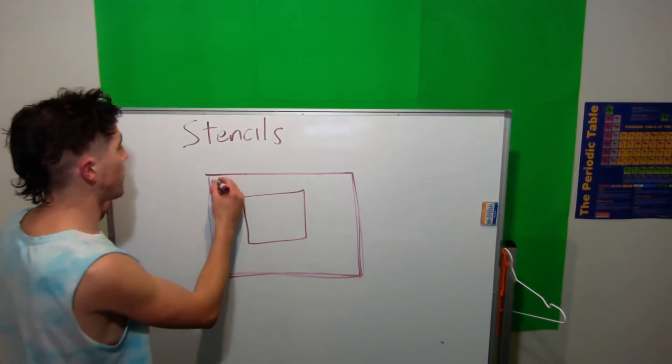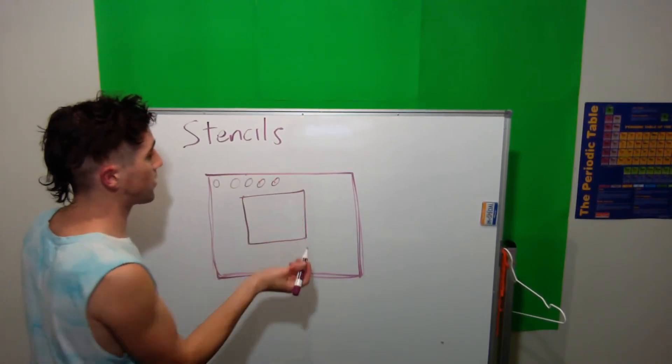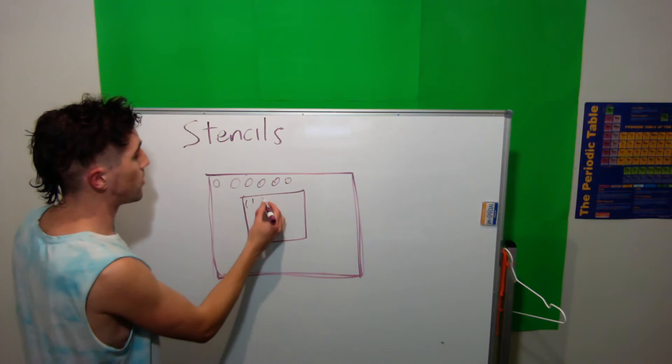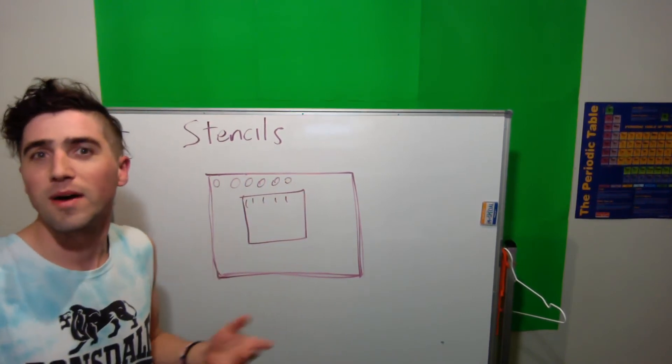So, by default, a stencil buffer might look like 0, 0, 0, 0, etc., right? And then in here, it's going to be 1, 1, 1, 1, 1. And that's how you might imagine it looking.